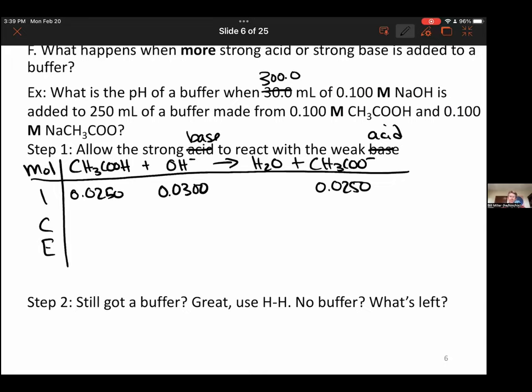Now our limiting reactant is the weak acid because it's the smaller number. Always subtract the smaller number. Mole ICE tables are another way of doing limiting reactant problems. The change values have to be related to the coefficients, which are all ones, giving us 0.0050 and 0.0500 at equilibrium.